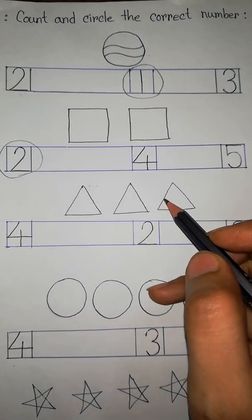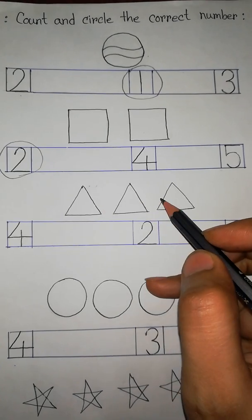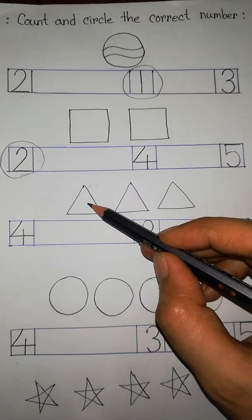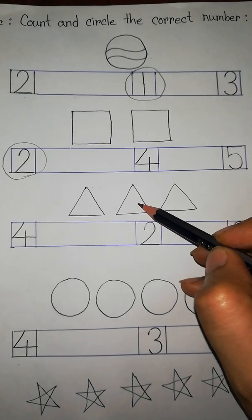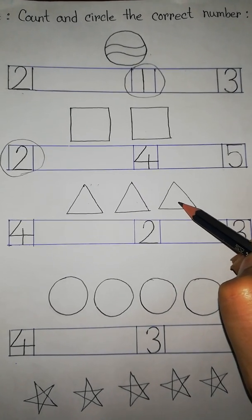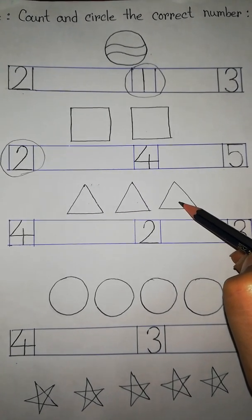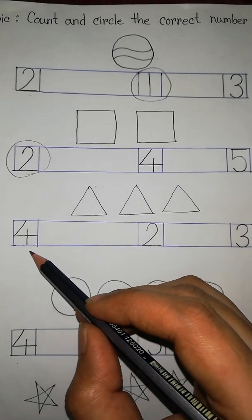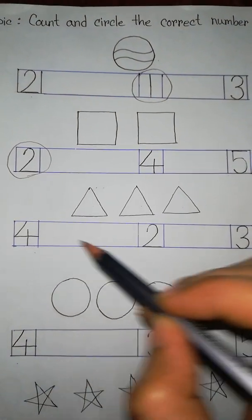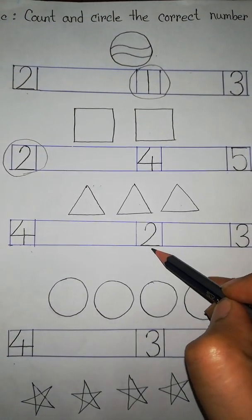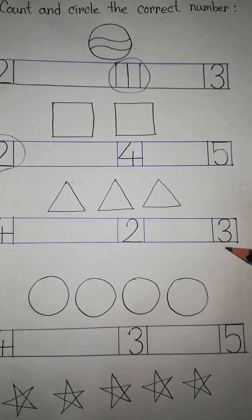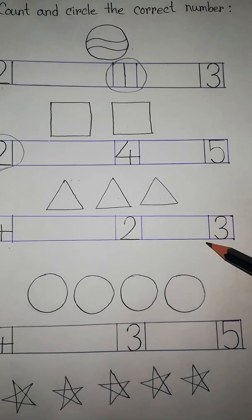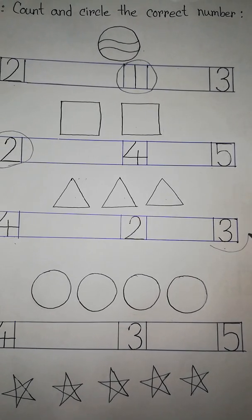What is this picture? This is triangles. How many triangles here? 1, 2, 3. There are 3 triangles. Is it 3? No. Is it 3? No. Is it 3? Yes. So we circle the number 3.